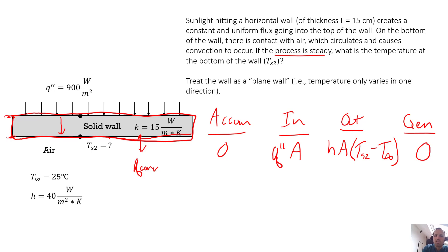So remember when we compile our energy balance equation, we have accumulation equals in minus out plus generation. So we get zero is equal to Q double prime times A. We subtract our out term: HA times (TS2 minus T infinity). So that's our equation.